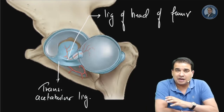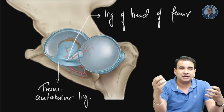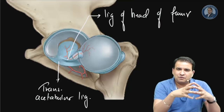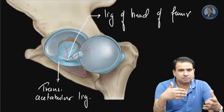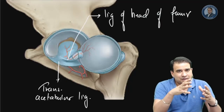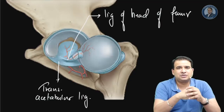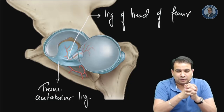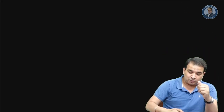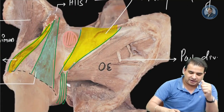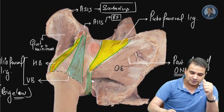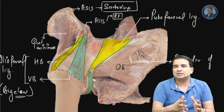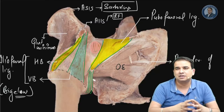Sometimes the ligament may be absent but the synovial sheath usually persists, so you might only see the sheath extending from the acetabular notch to the fovea capitis. Very rarely, both the sheath and the ligament are absent, but most often both are present. These are the important ligaments of the hip joint - from the anterior aspect: the pubofemoral and iliofemoral ligament with its vertical and horizontal bands, and the surrounding important muscles and tendons.